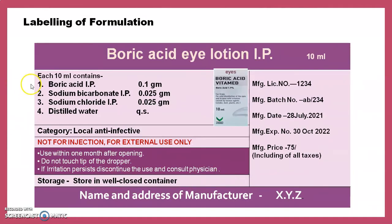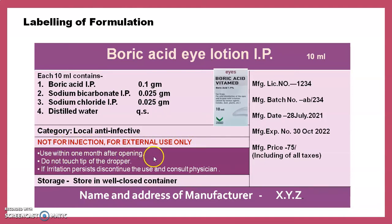Then we see the labeling. The label contains the name of preparation at the top, volume on the left/right side, and each 10 ml contains: boric acid IP 0.1 g, sodium bicarbonate 0.025 g, sodium chloride 0.025 g, distilled water q.s. Category: local anti-infective. Warnings: not for ingestion, for external use only. Secondary warnings: use within one month after opening; do not touch the tip of the dropper; if irritation persists, discontinue use and consult physician. Storage: store in a well-closed container. Manufacturing details include: manufacturing license number, batch number, date of manufacturing, expiry date, maximum retail price, and name and address of the manufacturer.